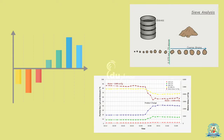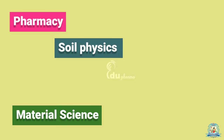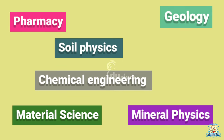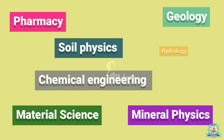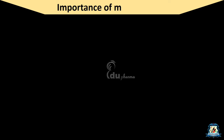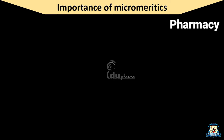The knowledge and control of the size of particles are of importance in pharmacy, material science, and other fields of science, including soil physics, mineral physics, chemical engineering, geology, hydrology, etc. I am going to explain the importance of Micromeretics in the field of pharmacy.